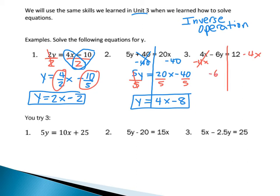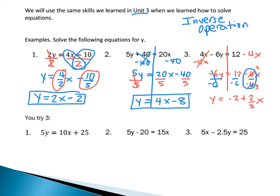That gives me negative 6y equals 12 minus 4x. Then I divide by negative 6 carefully. I divide each term by negative 6. That gives me y equals 12 divided by negative 6, which is negative 2. And then negative 4 divided by negative 6 — I can't reduce that to a whole number, so I leave it as a fraction. Both are negative, so when divided they give a positive. Two goes into each: so that's 2 over 3. So it becomes positive 2 over 3 times x.